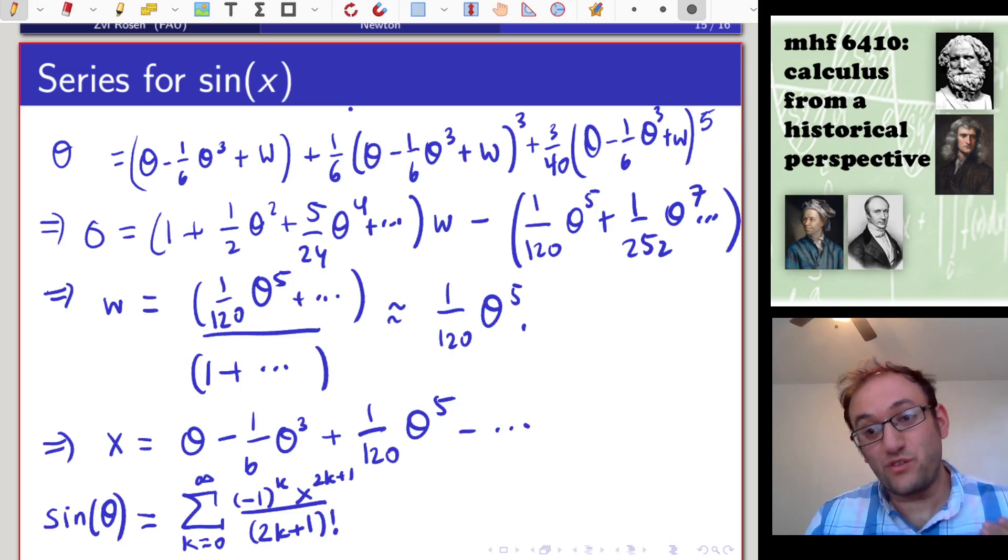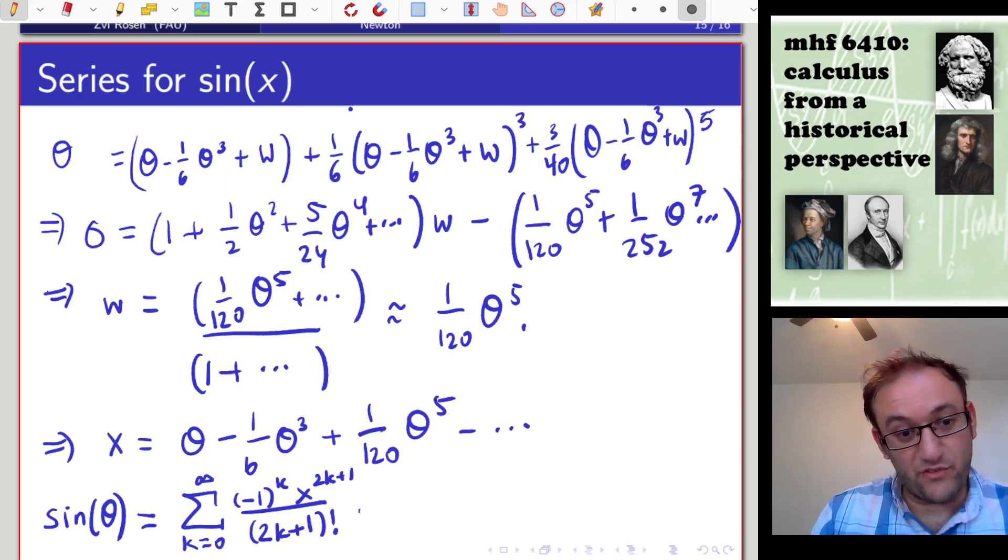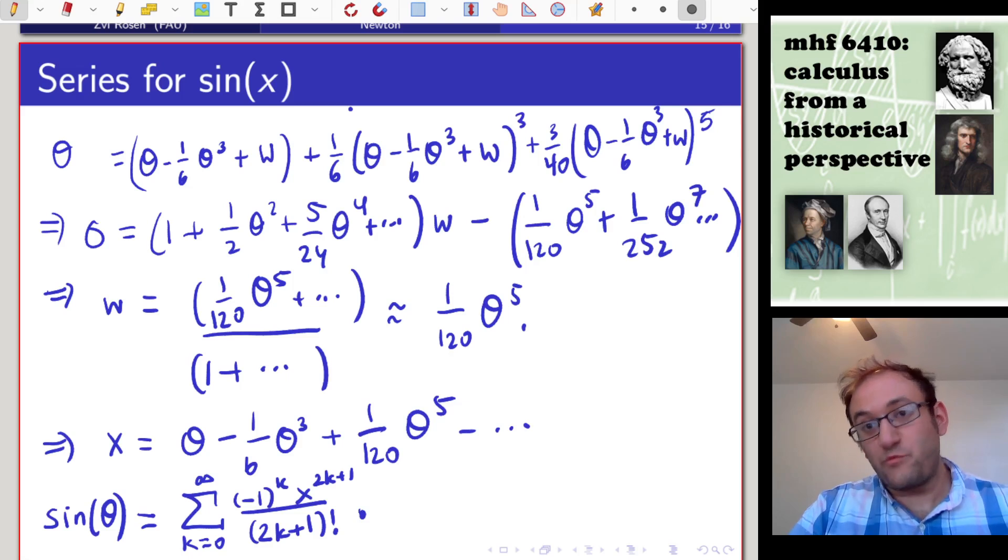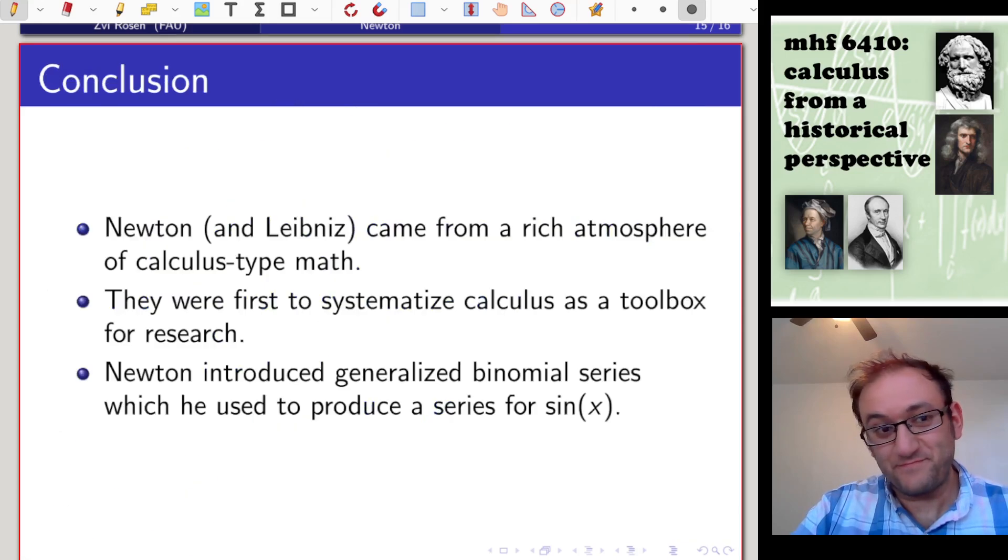Arriving at that by starting with the generalized binomial theorem, finding the series for arc sine, and inverting the series. Hopefully this gives you a flavor of Newton for just the computational genius that he was and the creative genius that he was applying all sorts of techniques and tools, throwing them at a problem and seeing what popped out. So in conclusion, Newton and Leibniz both came from a rich atmosphere of calculus-type math going back hundreds of years. But they were the first to systematize calculus as a toolbox for research. As a flavor of his concrete research output, Newton introduced generalized binomial series which he used to produce a series for sine x. In the next lecture, we'll see Leibniz. Thanks so much for your attention.